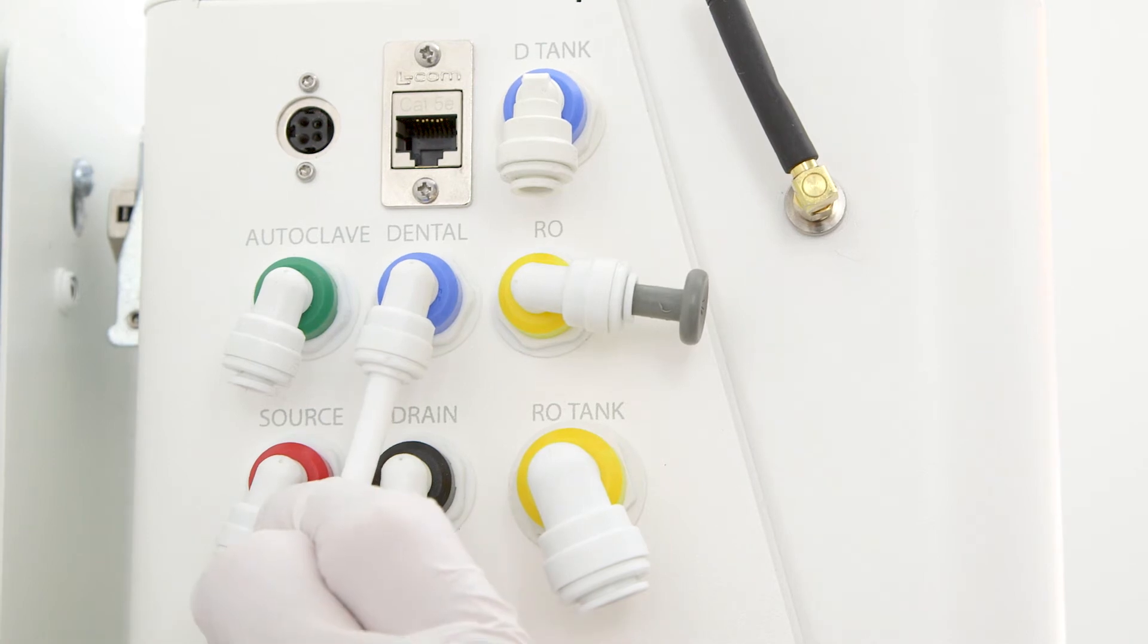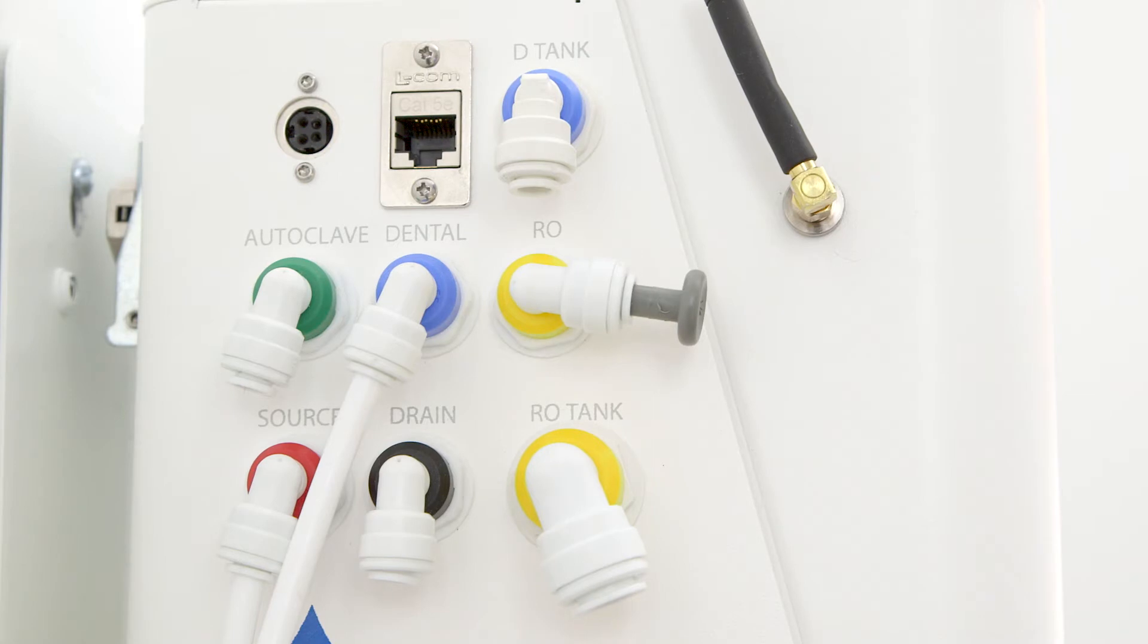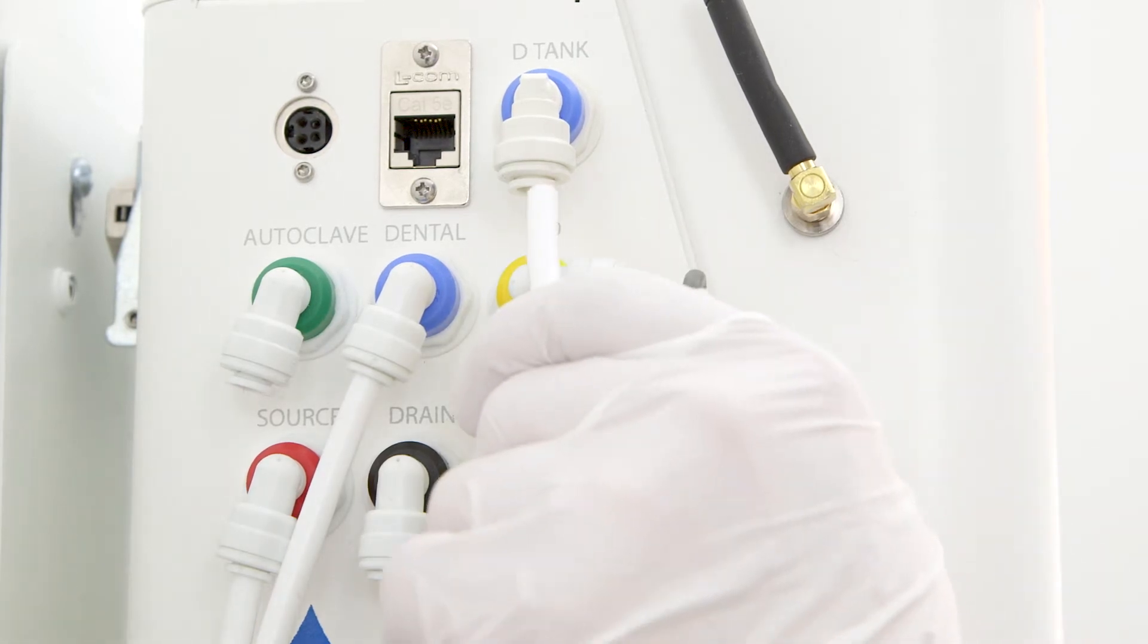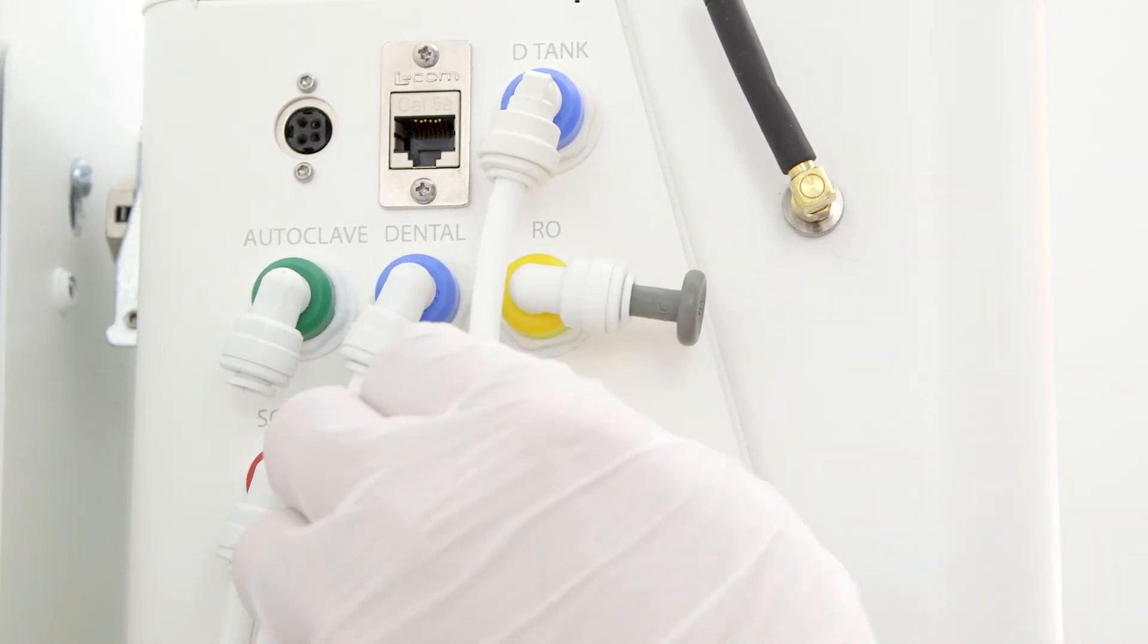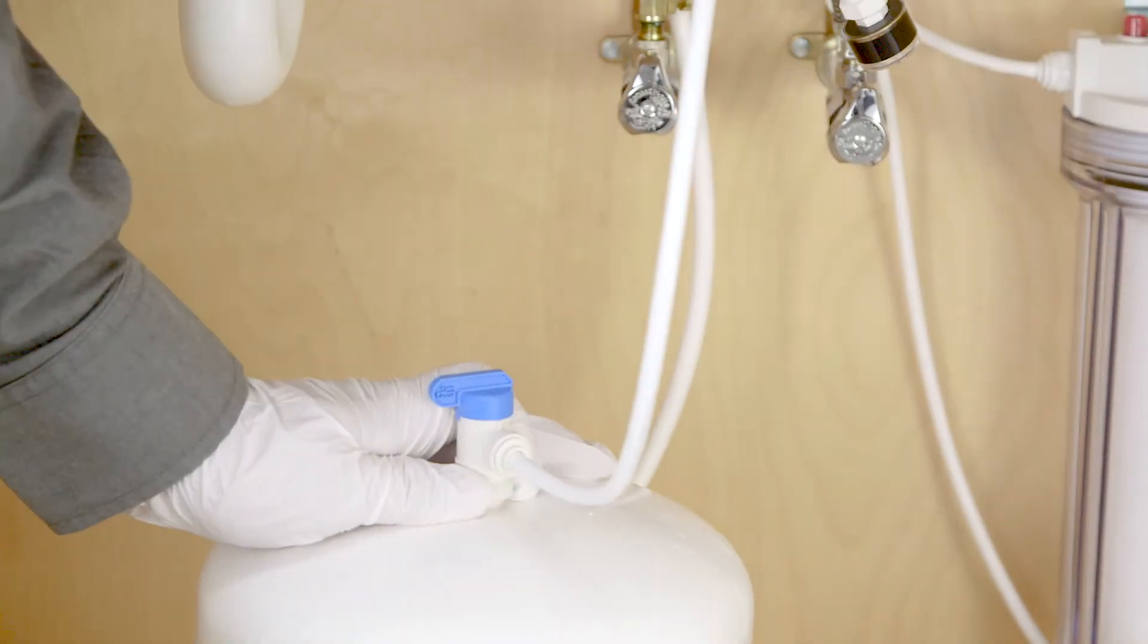Dental port. Run a quarter inch line from the blue dental port on the system to the dental water faucet. D-tank port. Now run quarter inch tubing from the blue D-tank port on the system to the quarter inch tank ball valve on the dental water storage tank.